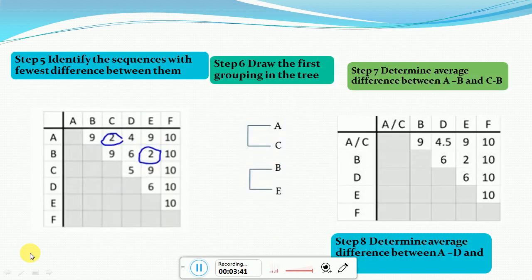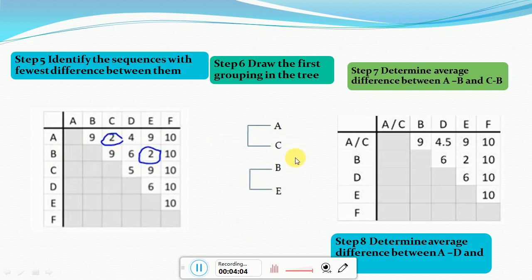The next step is to identify the lowest value in the matrix. In this example the lowest value is 2, which appears between sequences A and C, and also between sequences B and E. So we can say A and C are more closely related, and similarly B and E are more closely related. We then generate a partial phylogenetic tree showing AC and BE as close pairs.